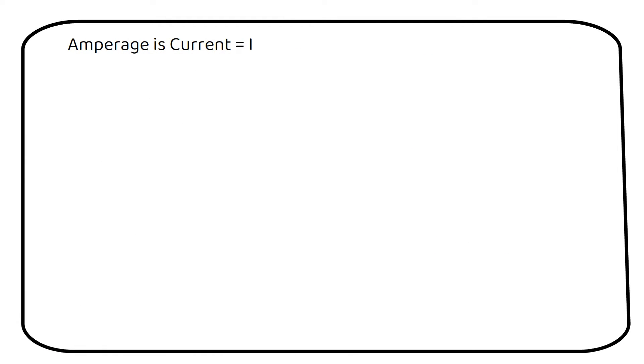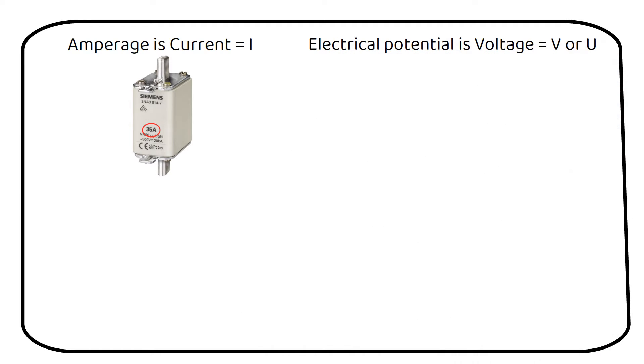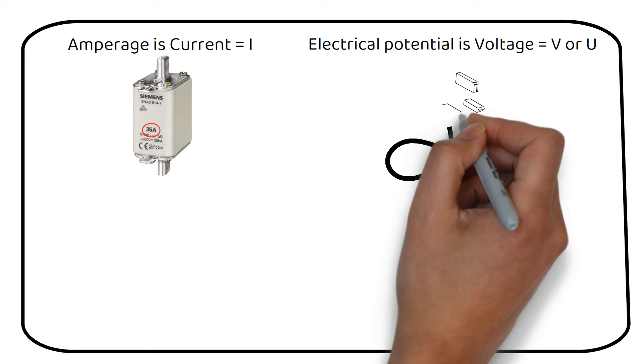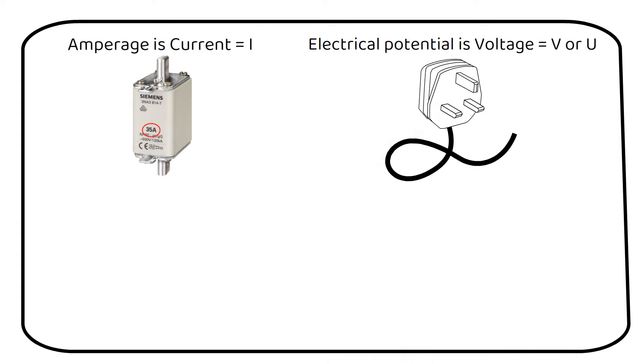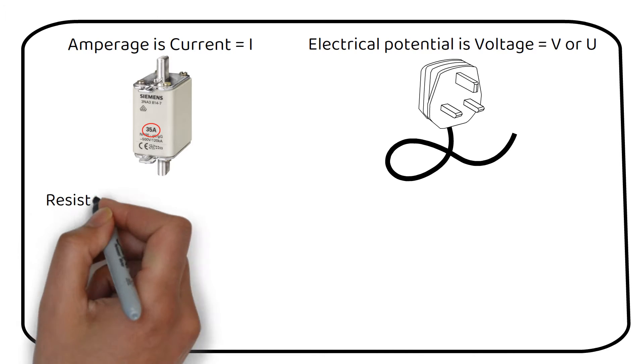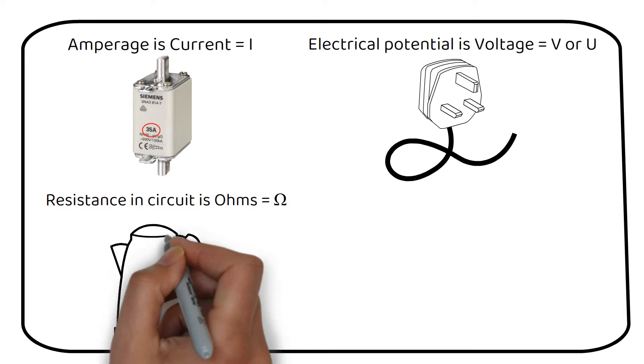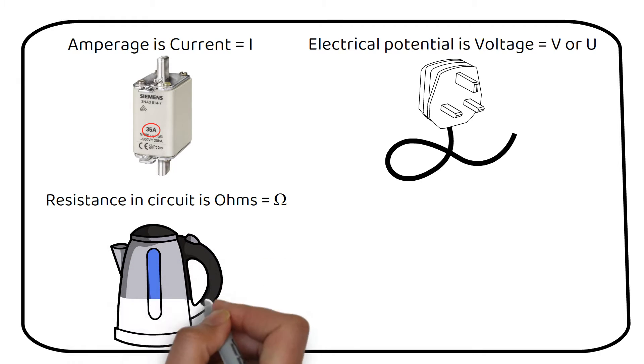Amperage is current through a circuit. This fuse has a current capacity of 35 amps. Voltage is a unit of electrical potential. The voltage at your house is 120 volts or 230 volts alternating current. A battery bank can be 12, 24 or 48 volt direct current. Resistance is a measurement of the obstructions in a circuit. It can be used to heat water like a kettle. The more components like lugs, switches and fuses you have, the more resistance there is in your circuit.